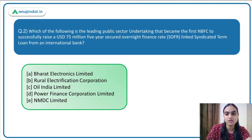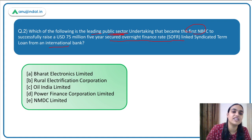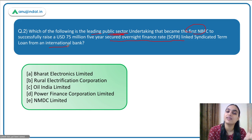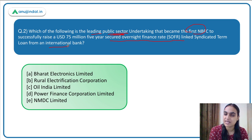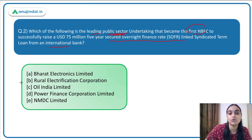Moving to Question 2: which leading public sector undertaking became the first NBFC to raise a 75 million US dollar five-year secured overnight financing rate linked syndicated term loan from an international bank? You have to identify the NBFC which raised a SOFR-linked loan — one of the alternative reference rates replacing LIBOR. The answer to this question is Option B — it's the Rural Electrification Corporation.